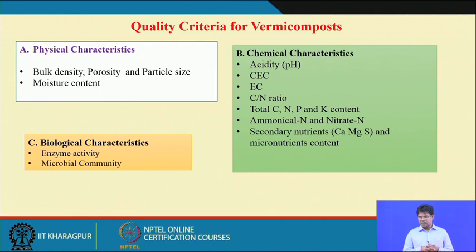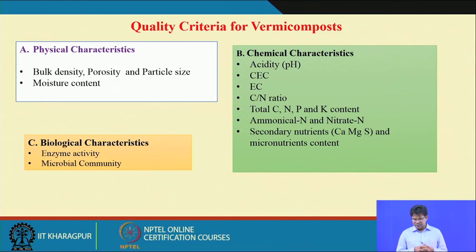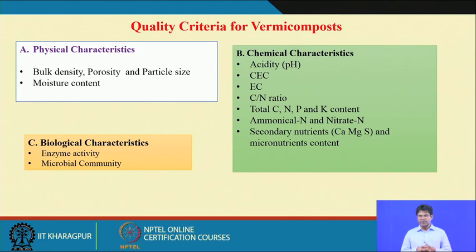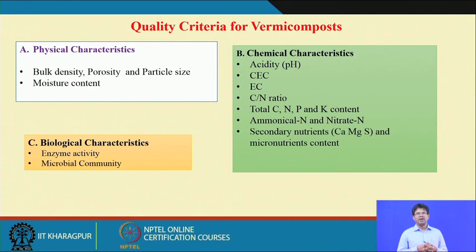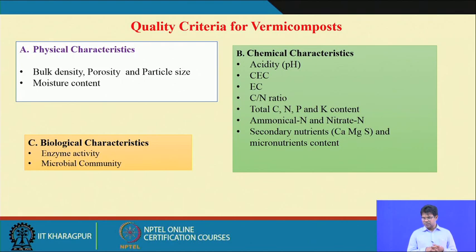For chemical properties, we assess the pH of vermicompost, cation exchange capacity (CEC) or ion exchange capacity — the buffering capacity indicating the nutrient release pattern. Electrical conductivity indicates salt concentration. C:N ratio, total carbon, nitrogen, phosphorus, potassium, and importantly ammonical nitrogen and nitrate nitrogen — plants take nutrients in these two forms. Most crops prefer nitrate nitrogen, while some like rice prefer ammonium nitrogen. Secondary nutrients like calcium, magnesium, sulphur, and micronutrient contents are also assessed.